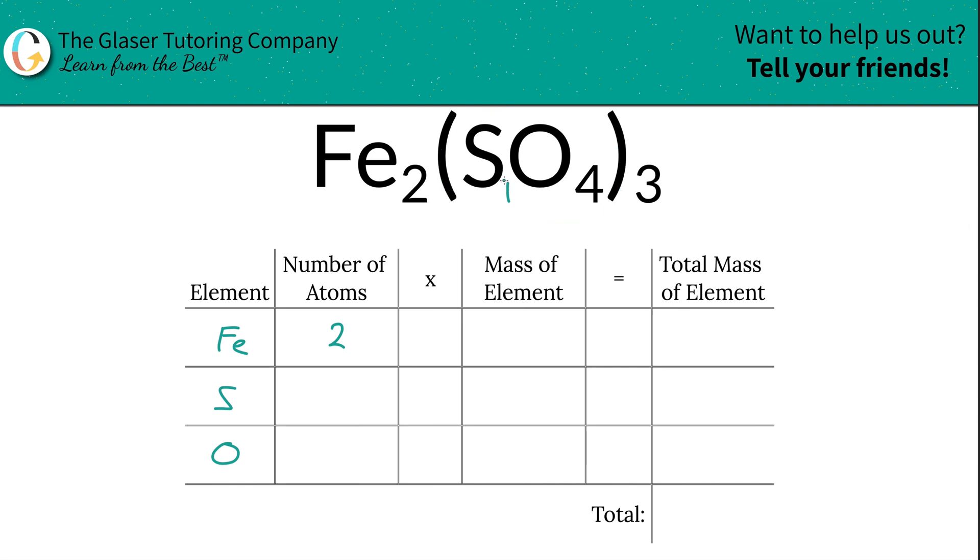So all you have to simply do to find the total sulfur is take that subscript of sulfur and multiply it by the outer subscript of 3. So the total amount of sulfur then would be 3. And then same thing for oxygen, you just multiply those numbers together so it's 12.